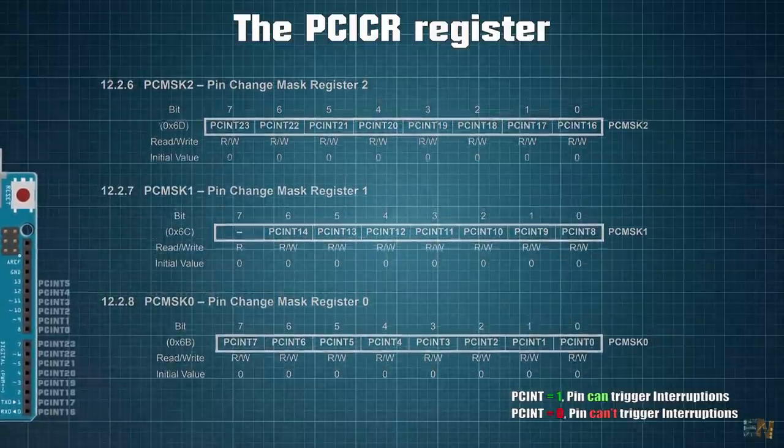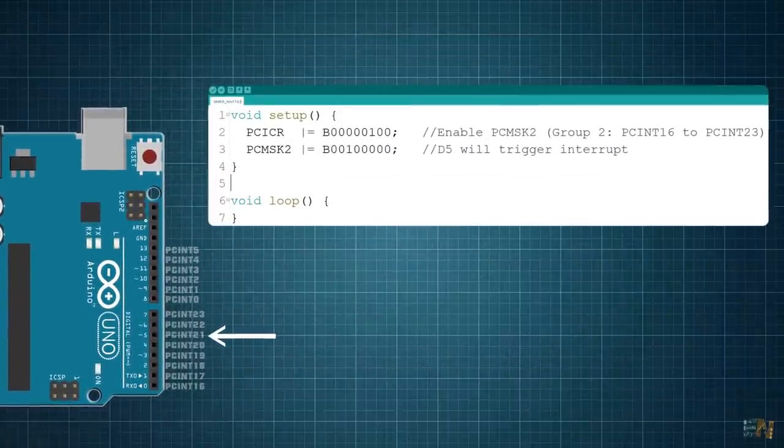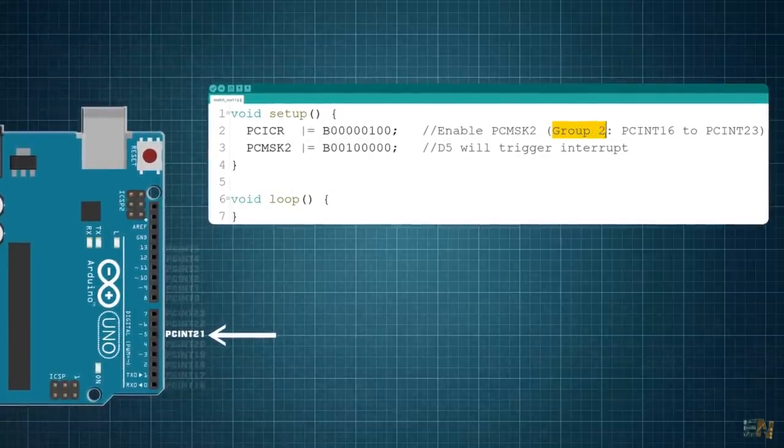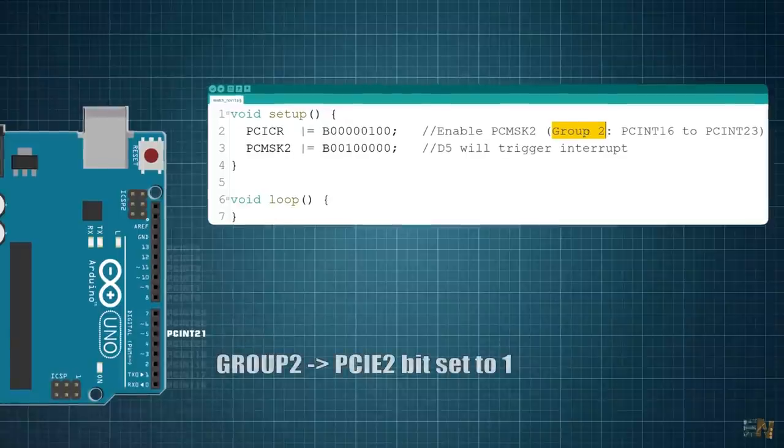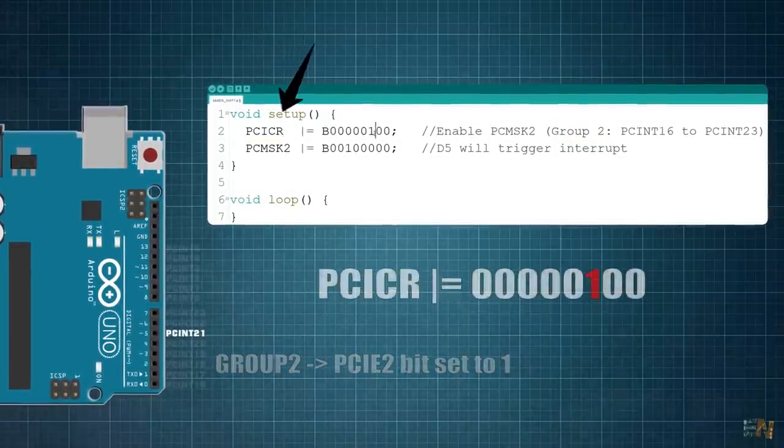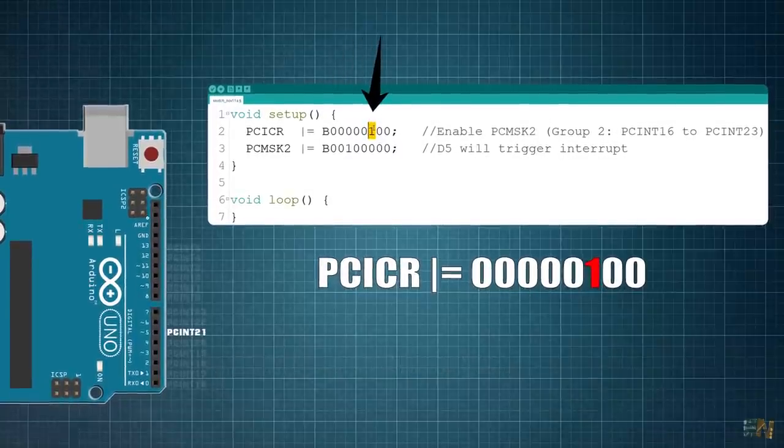Now knowing this, how do you think we can set pin D5 for example to trigger an interruption on pin change? Well, pin D5 corresponds to the PCINT21 and PCINT21 is from the PCIE group 2. So first we need to set the PCICR register to this value with the 1 on B2 so PCIE2 group could trigger interruptions.